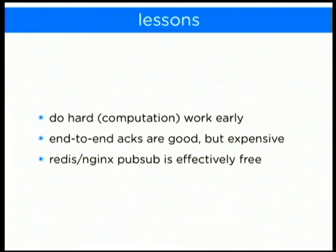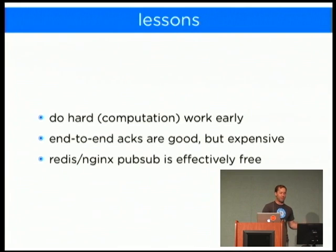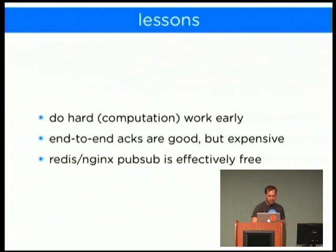Lessons learned: do your hard work early in the pipeline — data pipelines all the way down. When you have queues, put computation work early; even inside Python code, do your work early in the pipeline. End-to-end acks are great because you can make promises to partners about 100% uptime, but they're expensive — we couldn't do it for every front-end user, so be judicious. Pub/sub is free, so just abuse it. Greenlets are free — if you're using eventlet or gevent, use greenlets; they make your code so much easier to read.